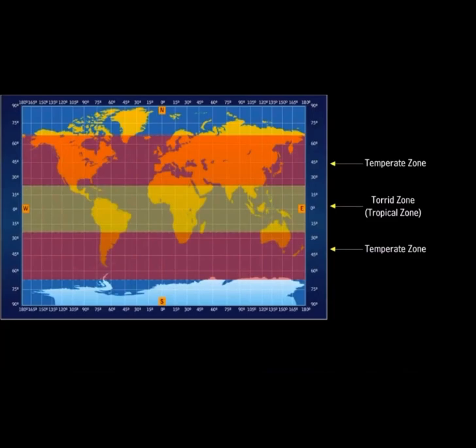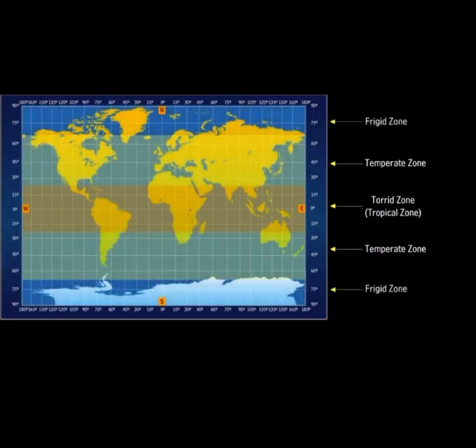The zone has moderate climatic conditions. The frigid zone lies around the North Pole within the Arctic Circle and around the South Pole within the Antarctic Circle. It is also known as the Arctic Zone in the Northern Hemisphere and the Antarctic Zone in the Southern Hemisphere. This is a very cold zone.